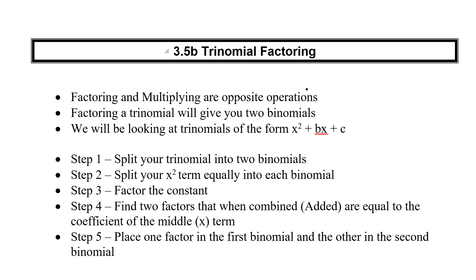So when I multiply two binomials, I got a trinomial. When I factor a trinomial, I'm going to end up with two binomials. And for grade 10, the trinomials we're looking for are going to be with the squared in the first term to the power of 1 in the second term, and then a constant at the end. We call that the x squared plus bx plus c form.